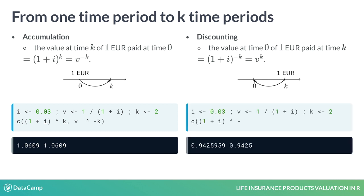The timeline on the right shows how one euro at time k discounts to v to the power k euro at time zero. From the R code, you learn that one euro at time two is worth 0.94 euro at time zero.